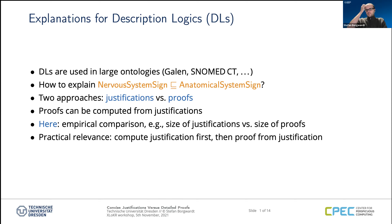The focus of this work was mainly an empirical comparison of these two ways of explaining, in particular regarding the size, but also some other measures. This also has a practical relevance for actually computing proofs, because if we find out that the size of the justification predicts the size of the proof — whenever I have a small justification I'm guaranteed to get a small proof — then I can compute the justification first, which is much easier, and from that compute the proof and still be more or less guaranteed to have a small proof.